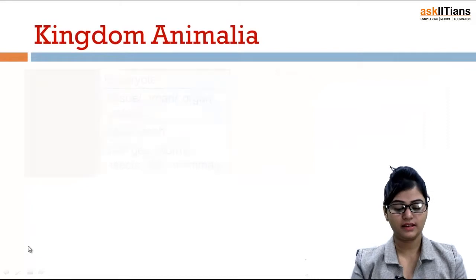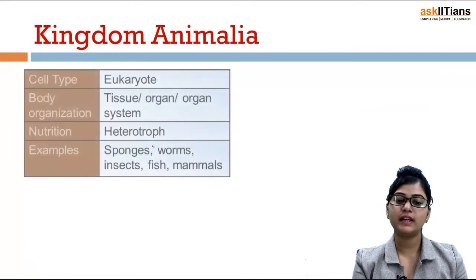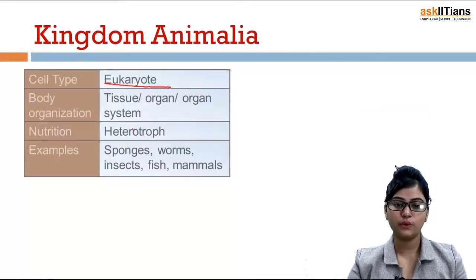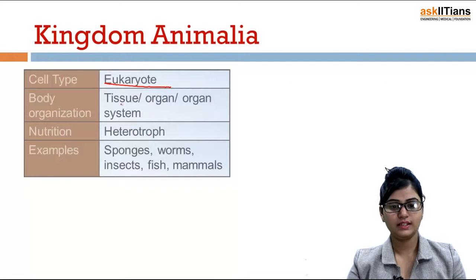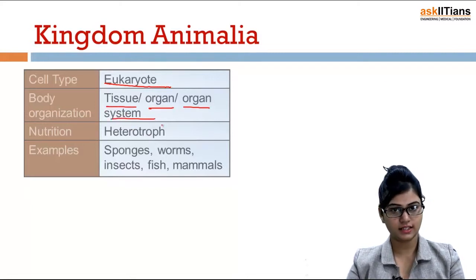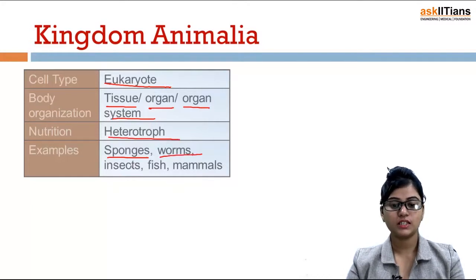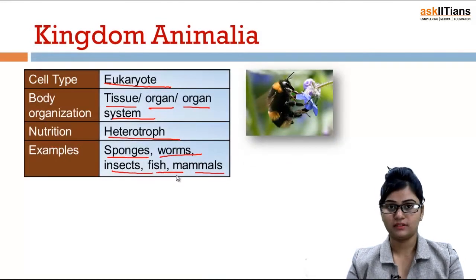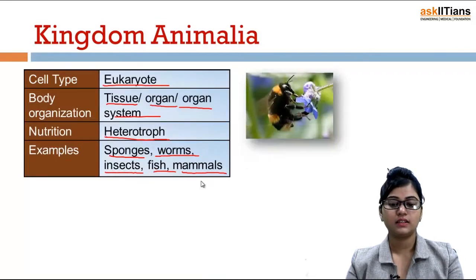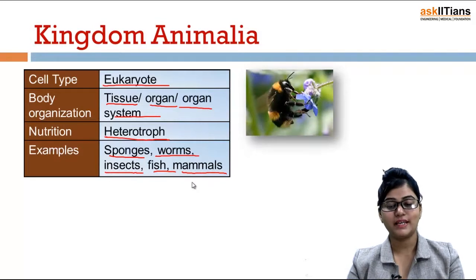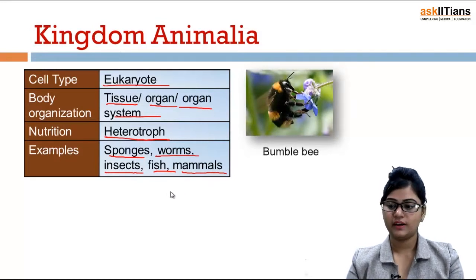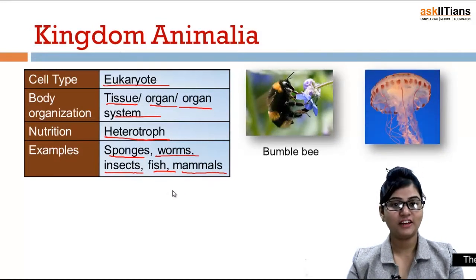Next is kingdom Animalia. Cell type is eukaryote. Body organization is tissue, organ, or organ system. Nutrition is heterotroph. Examples include sponges, worms, insects, fish, and mammals. Here is a bumble bee, and here is a jellyfish.